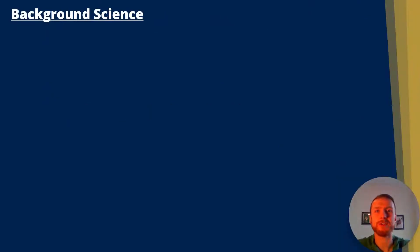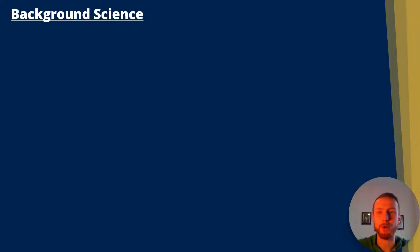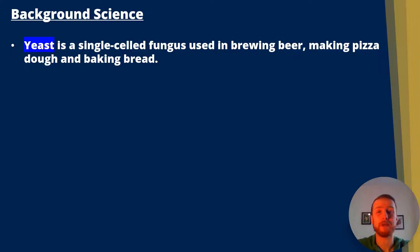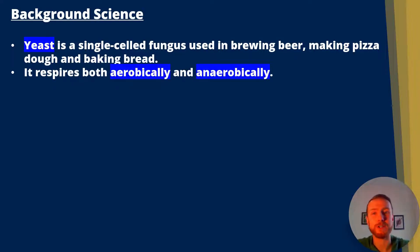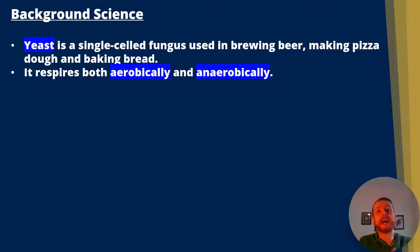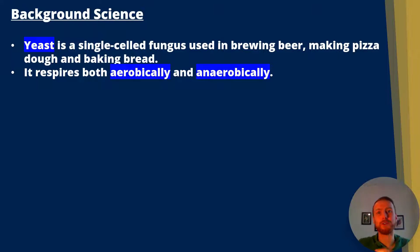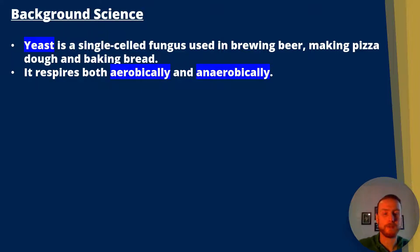Some background science first of all. Yeast is a single-celled fungus used in brewing beer, making pizza dough, and baking bread. It respires both aerobically and anaerobically. During aerobic respiration we have glycolysis, the link reaction, the Krebs cycle, and the electron transport chain, also known as oxidative phosphorylation.